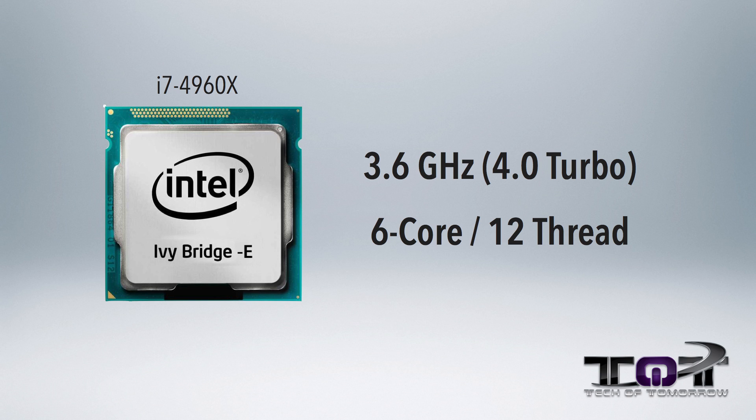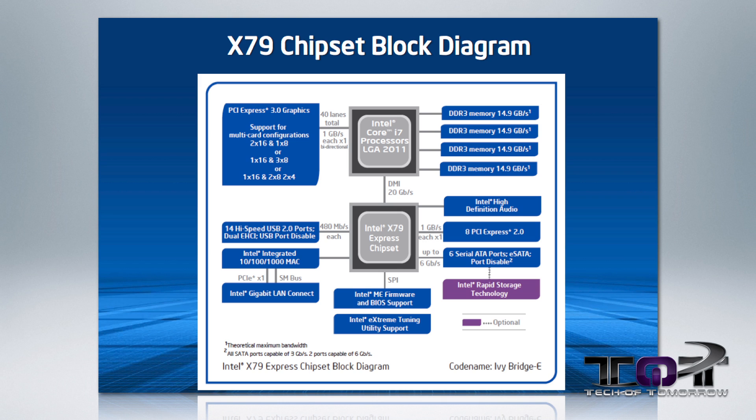The extra cores come into play when you want to use massive amounts of lanes with video cards, like doing a quad SLI or quad crossfire system, intense applications for 3D rendering, or when you want the maximum available amount of memory support. That's when you're going to look at the Ivy Bridge E.